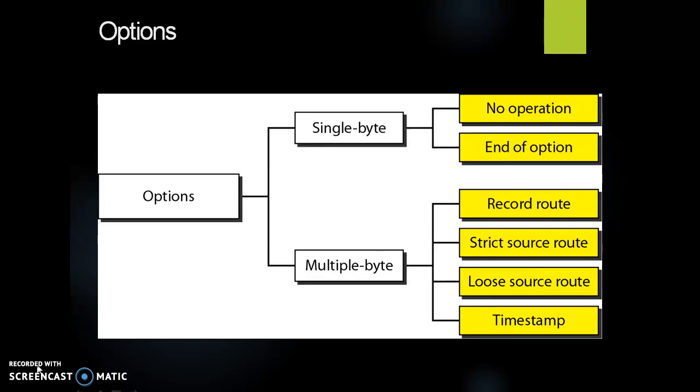Next is options. The header of the IPv4 datagram is made up of two parts: a fixed part and a variable part. The fixed part is 20 bytes long. The variable part comprises the options that can be a maximum of 40 bytes. Options, as the name implies, are not required for a datagram. They can be used for network testing and debugging. Options can be single byte or multibyte.